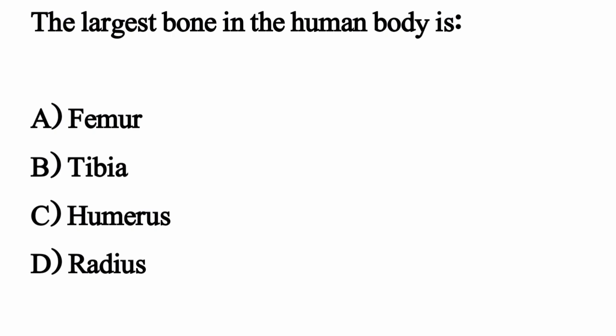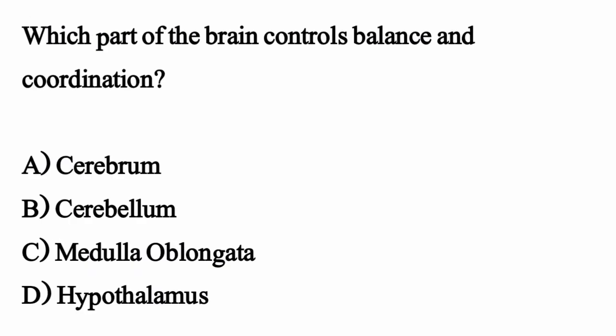The largest bone in the human body is — the correct option is Option A: Femur. Which part of the brain controls balance and coordination?